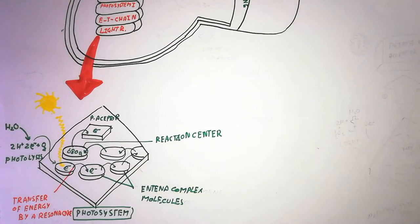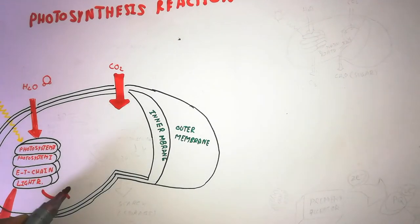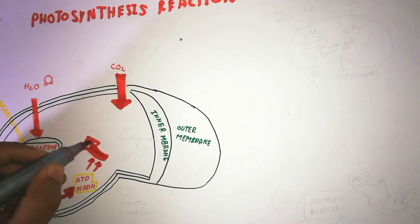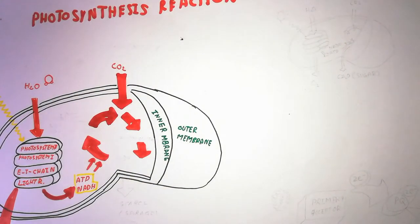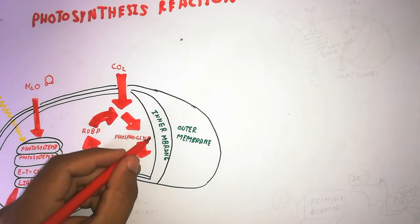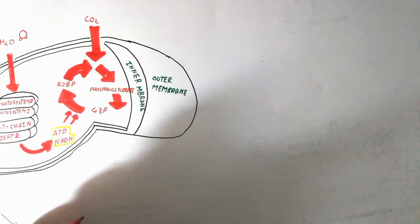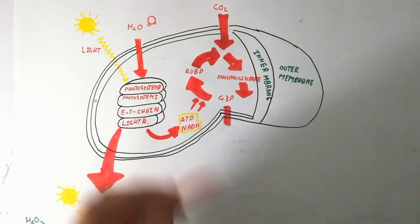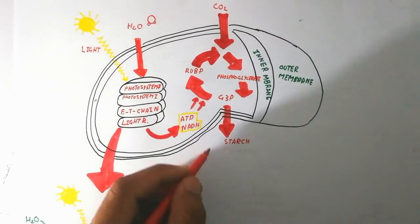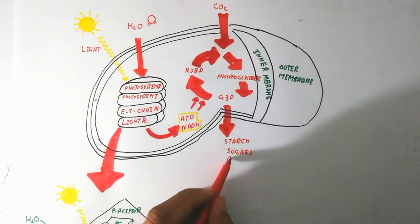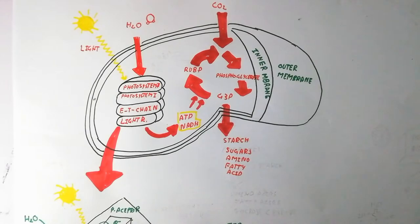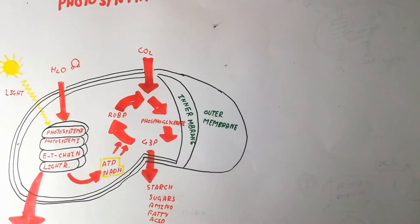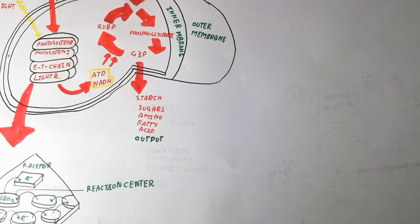The thylakoid membrane contains different systems for light harvesting. The dark reaction — the light-independent reaction — is known as the Calvin cycle, which involves carbon dioxide fixation to produce glucose by the RuBisCO enzyme. RuBisCO is responsible for the production of starch, sugars, amino acids, and fatty acids. Carbon dioxide is the input and glucose is the output.